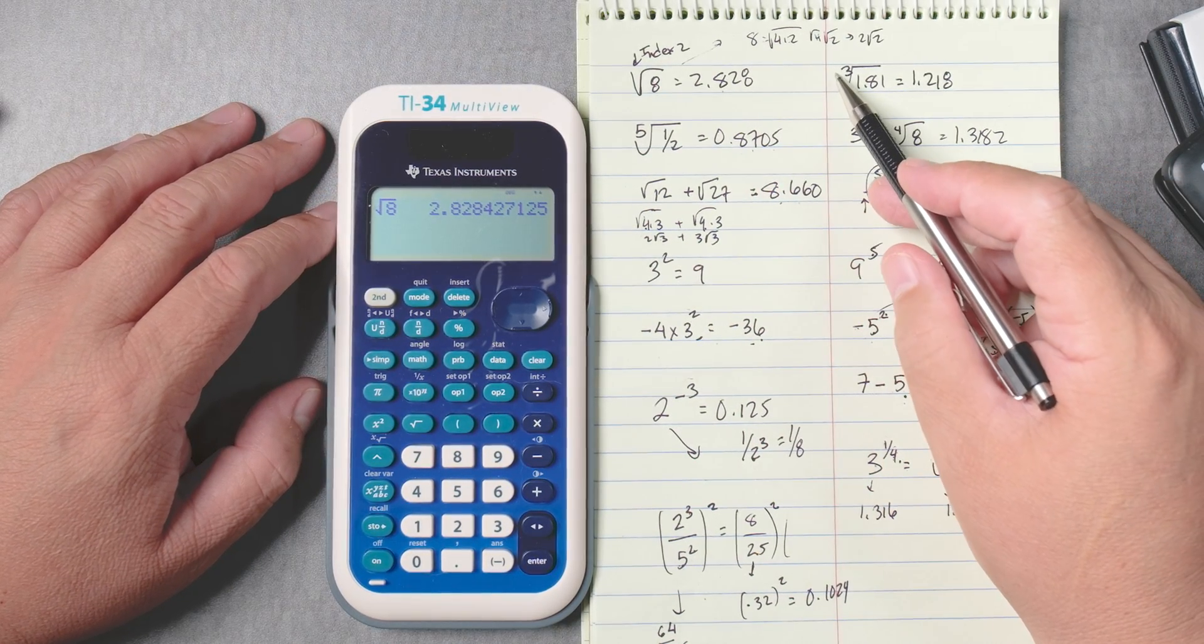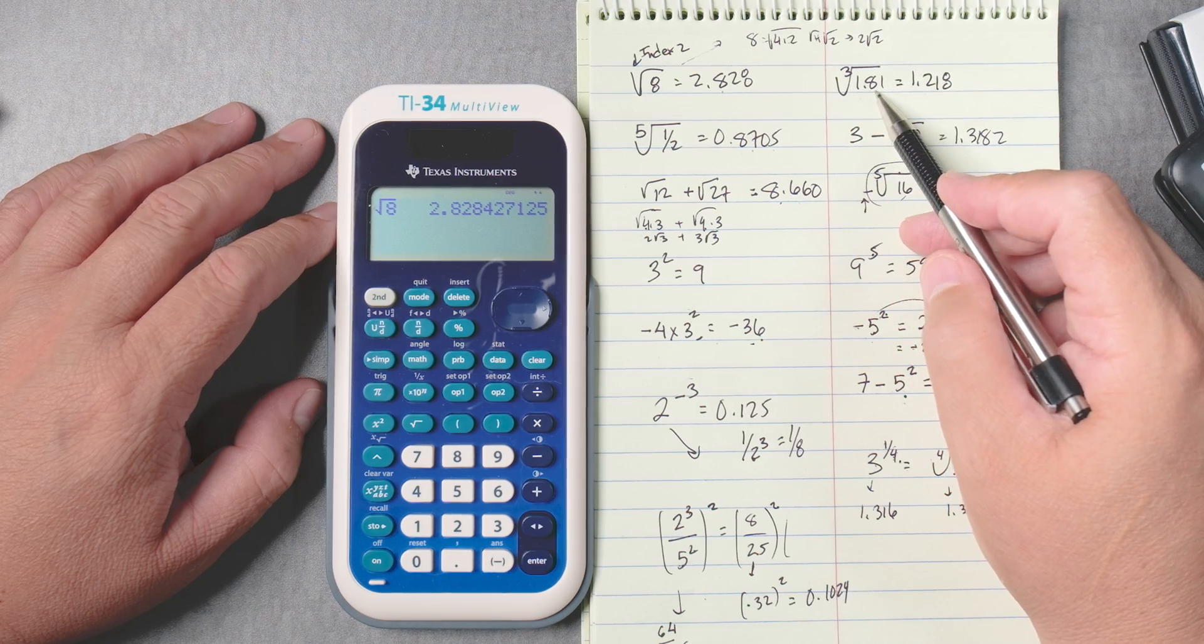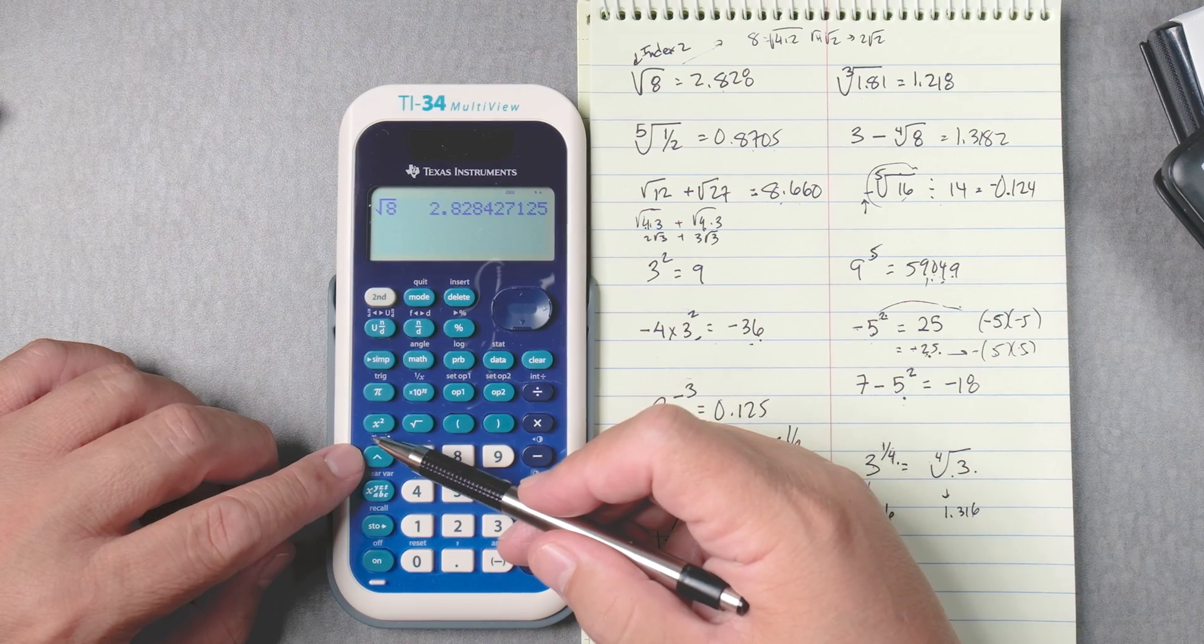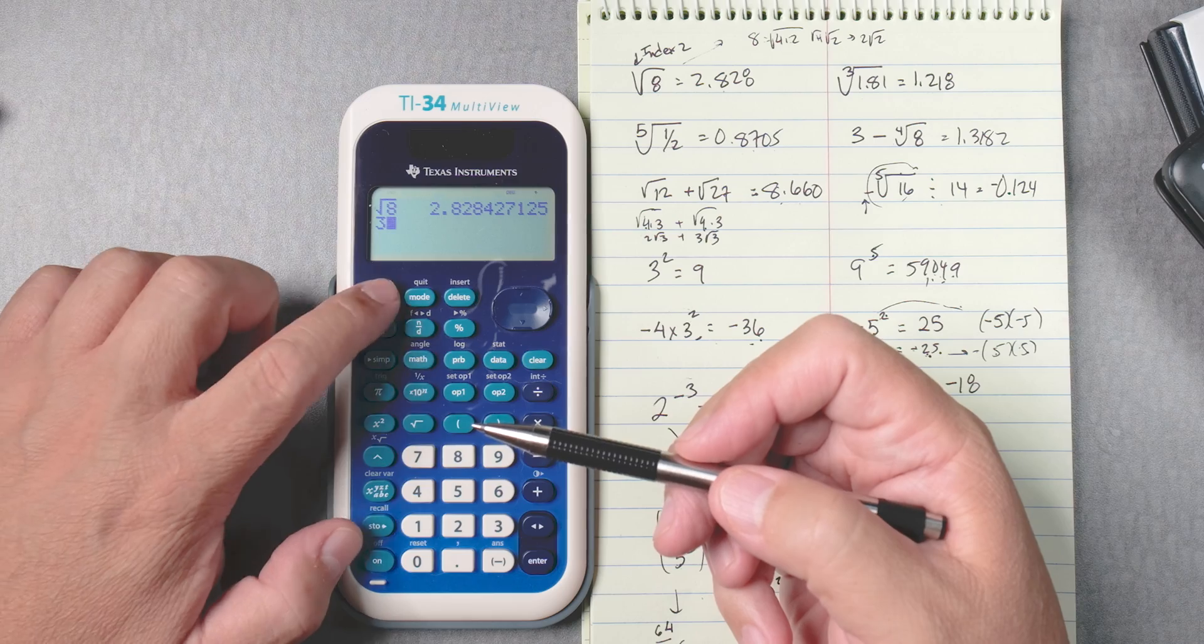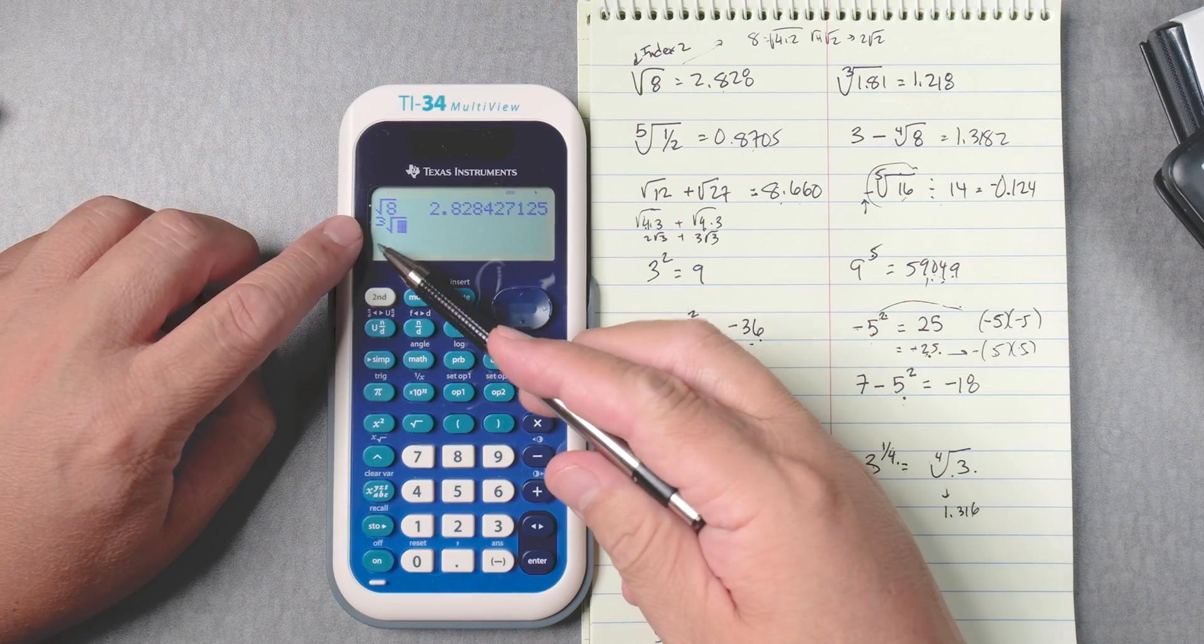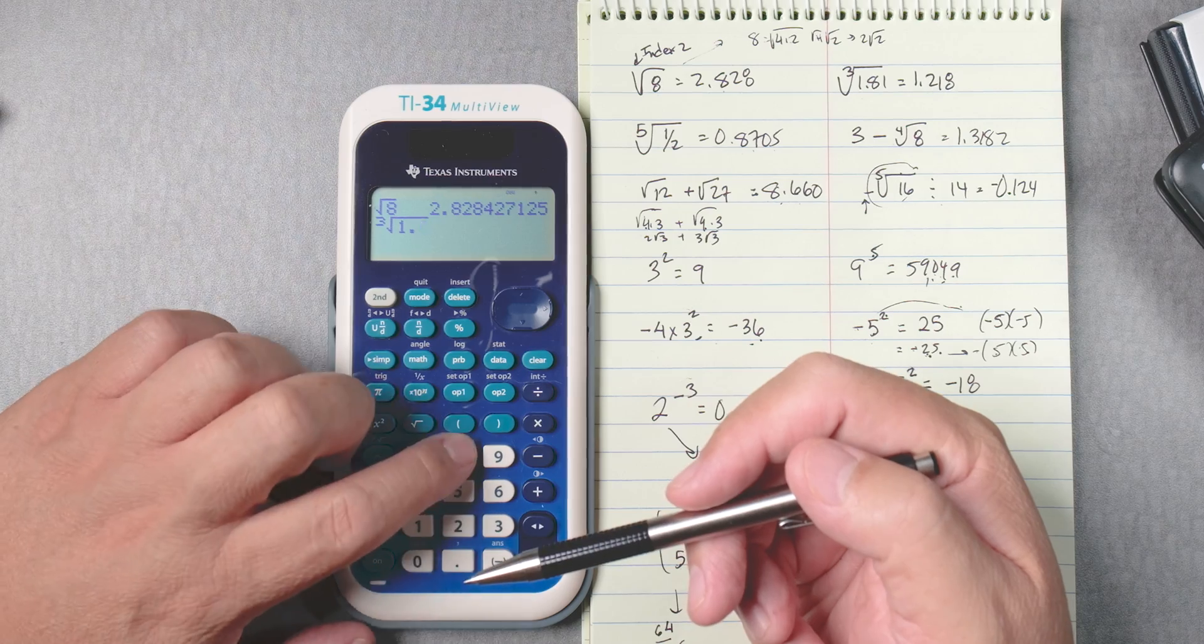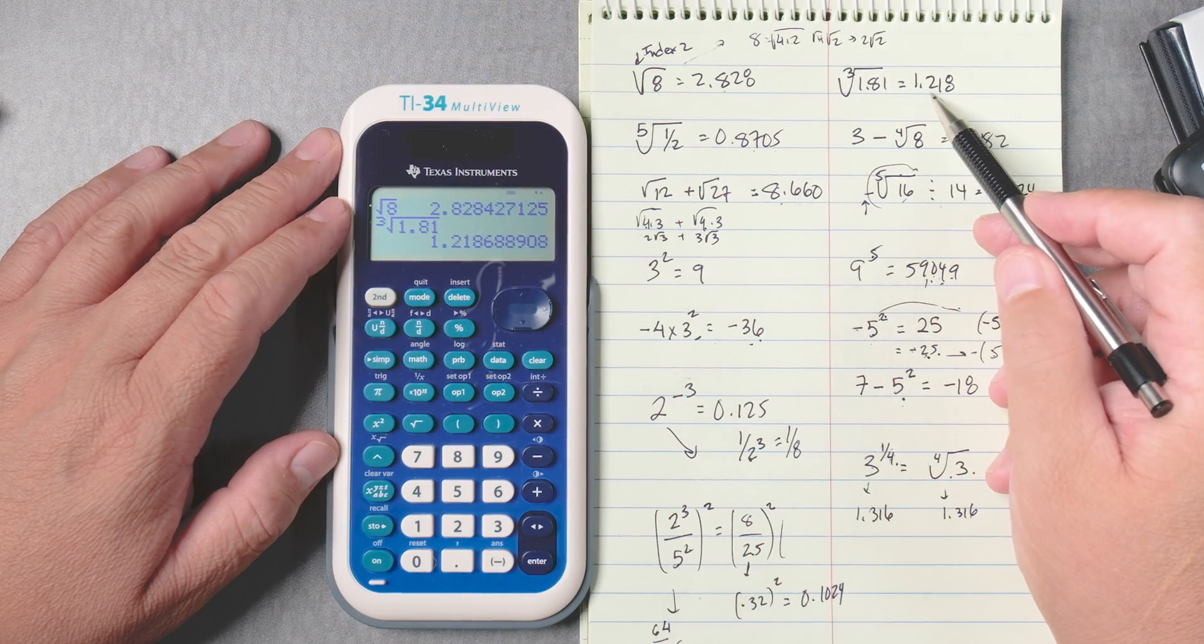Okay, next one. This is the third root of 1.81. Over here next to the caret key on the top, you have x square root, so we press 3, second, caret, and it automatically puts it as the third root of what? 1.81. Enter. 1.218.